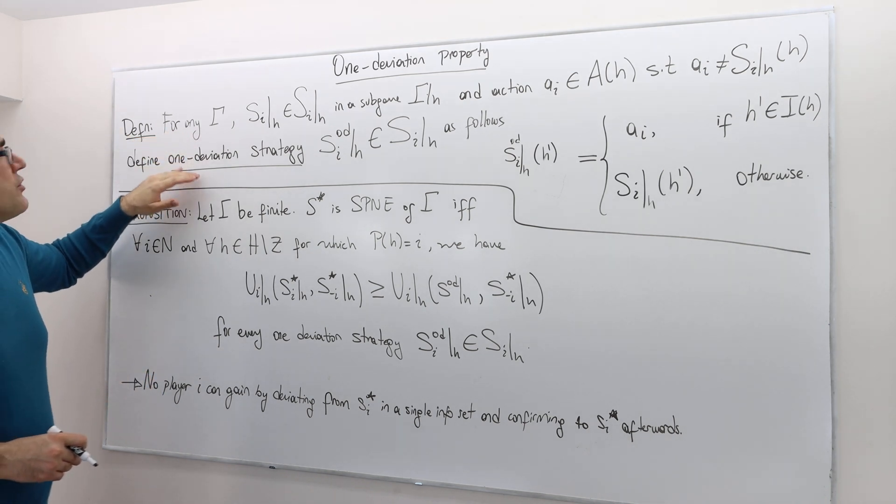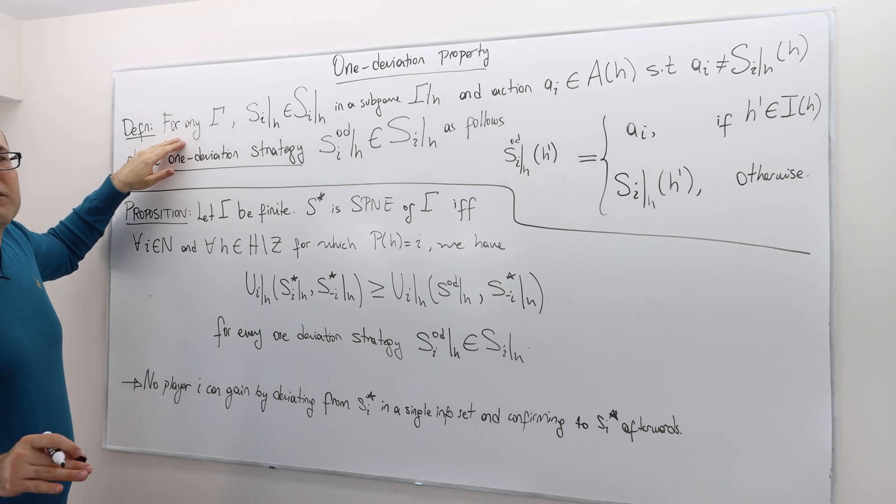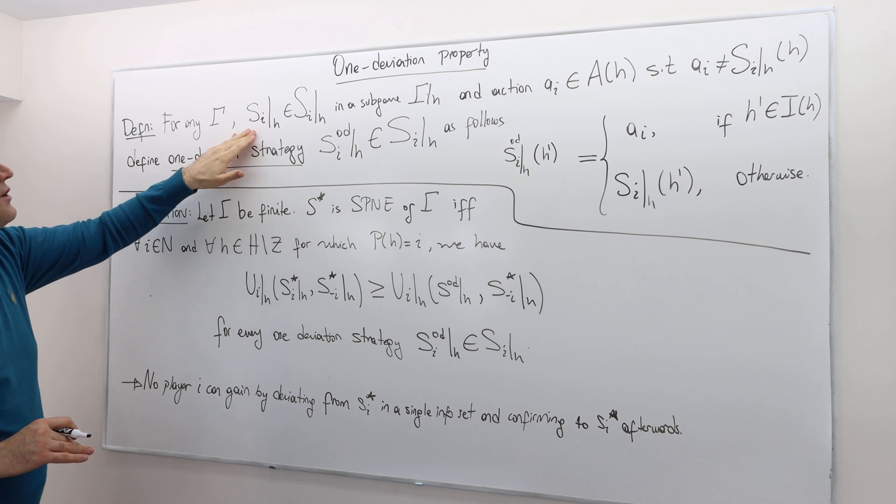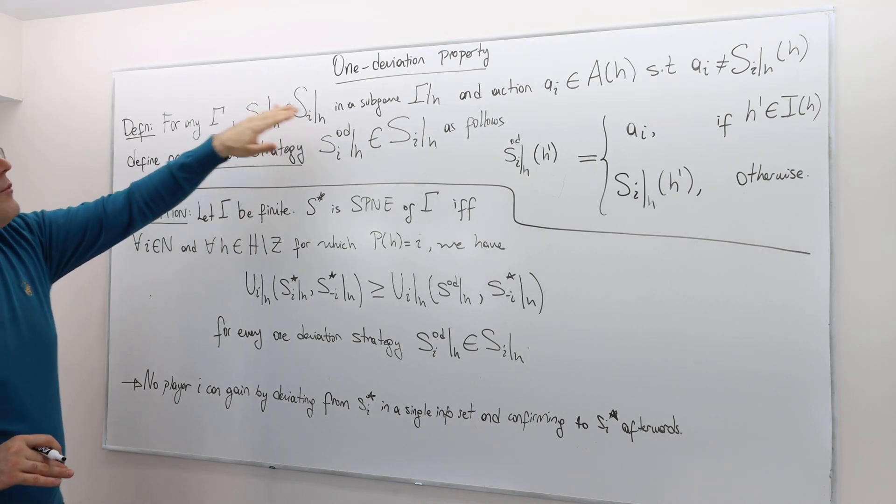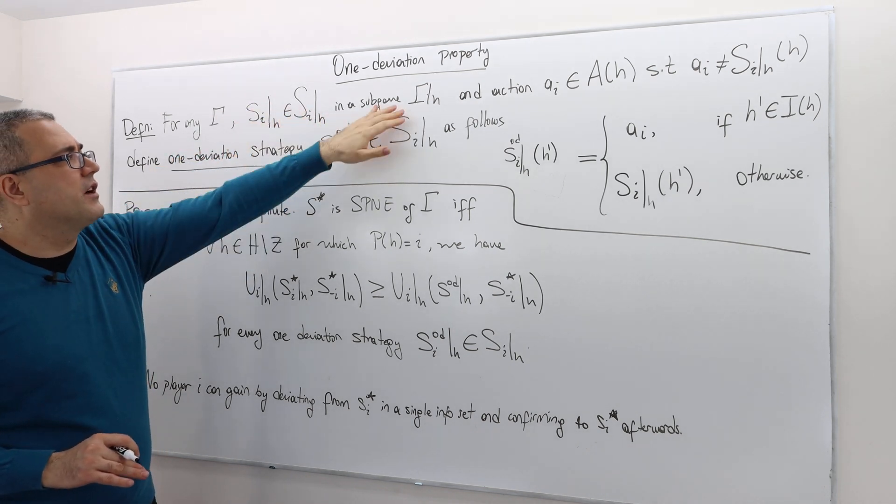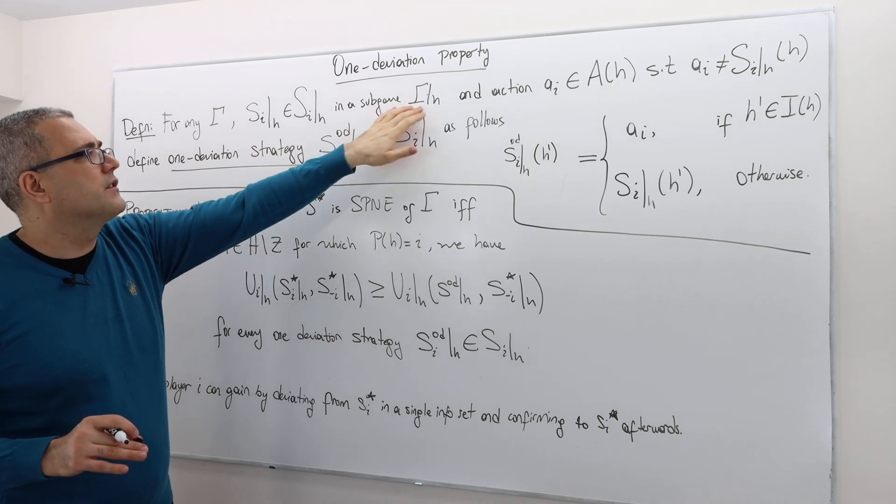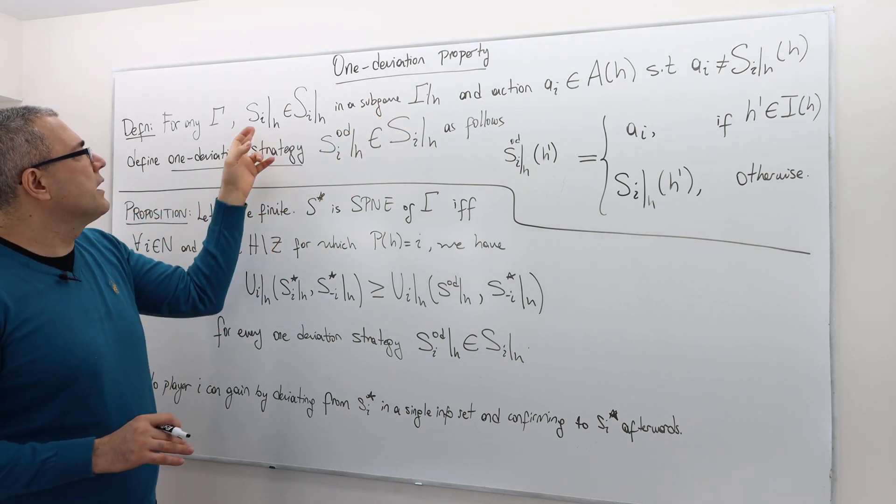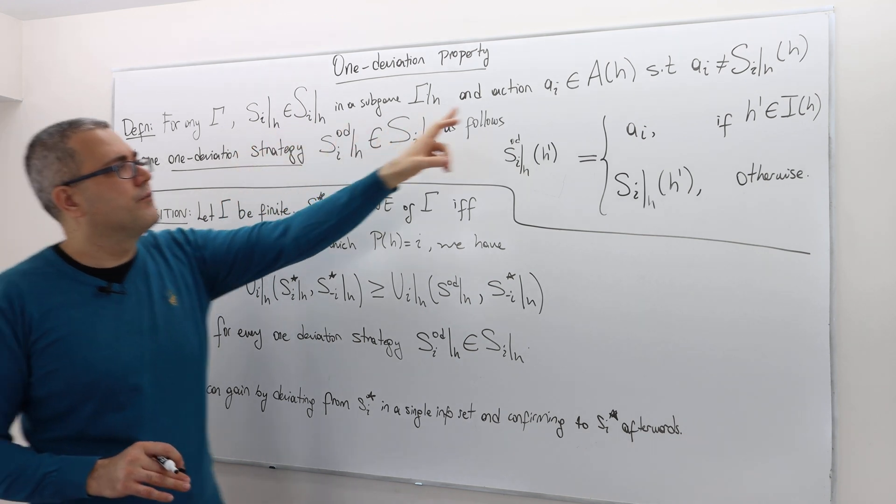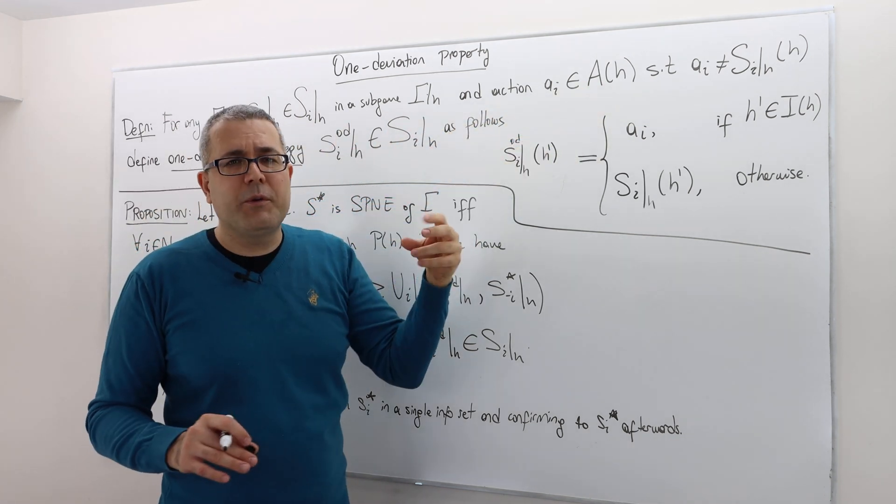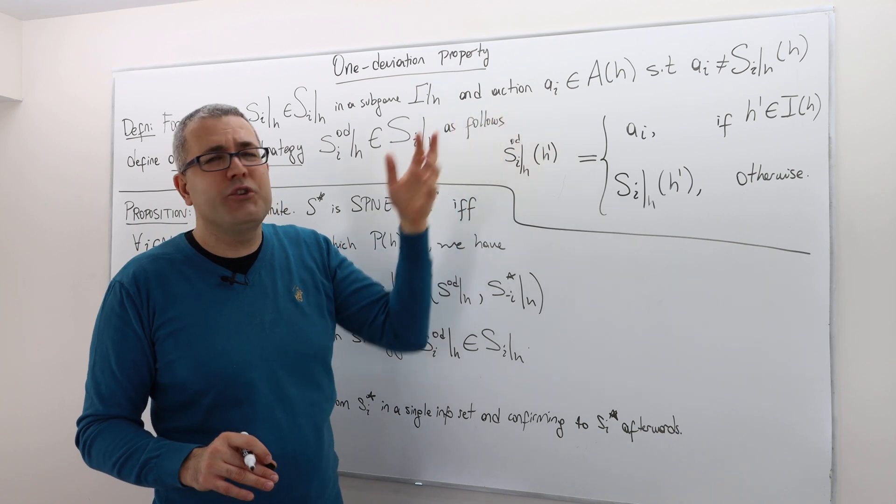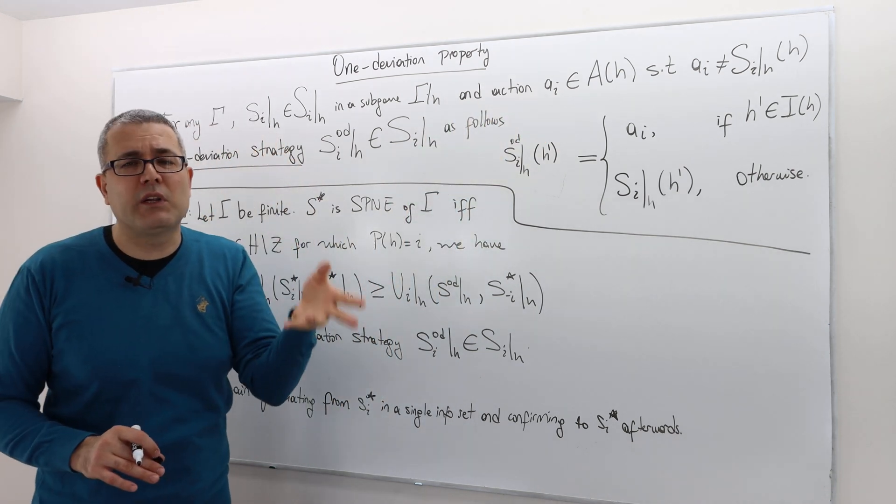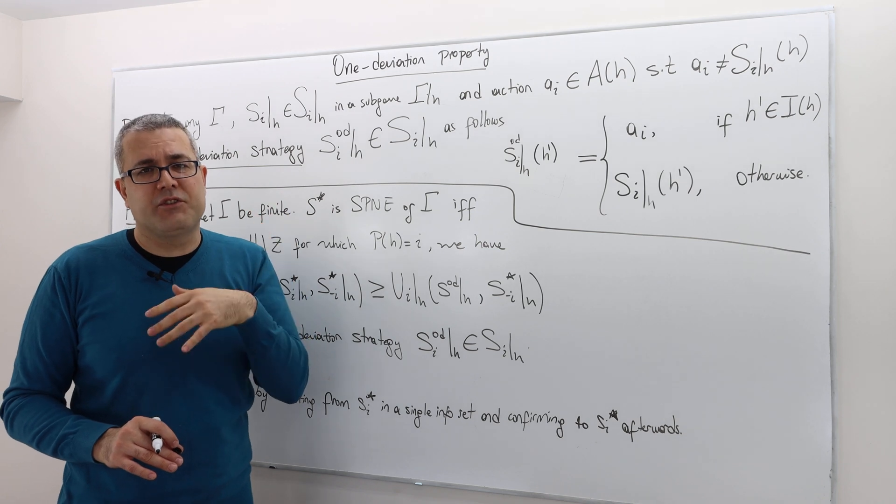So here's the definition. We can define one deviation strategy for any extensive form game, and then take any continuation strategy. So obviously, the continuation strategy is going to be a strategy in the sub game, and then take any action available to player I after history H. What is special about this action? Well, this action should be different than what originally this strategy tells player I to play after history H.